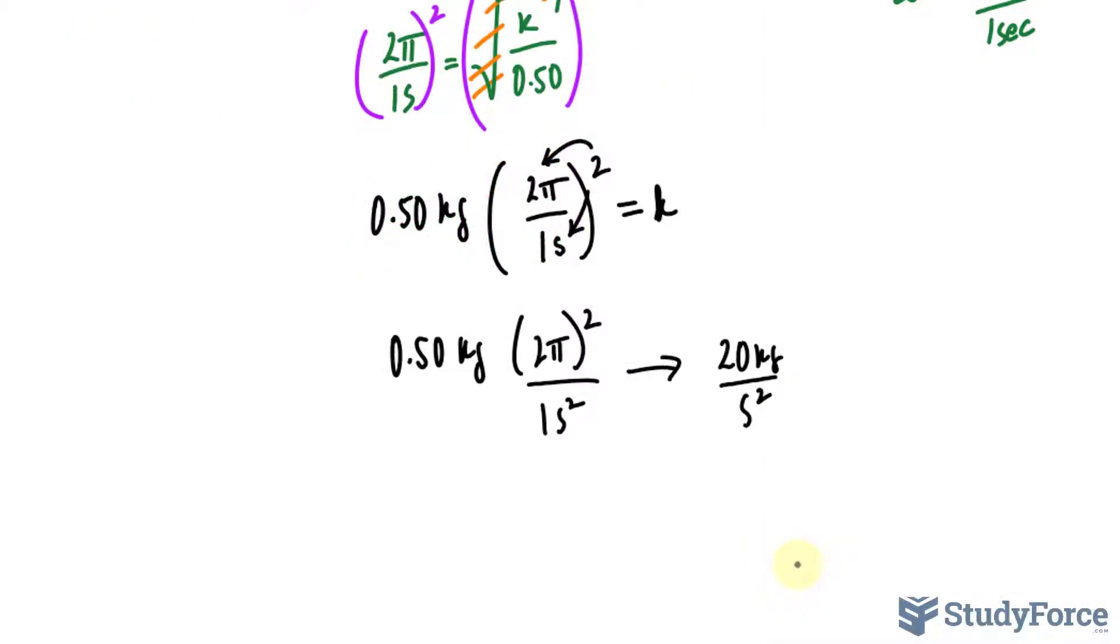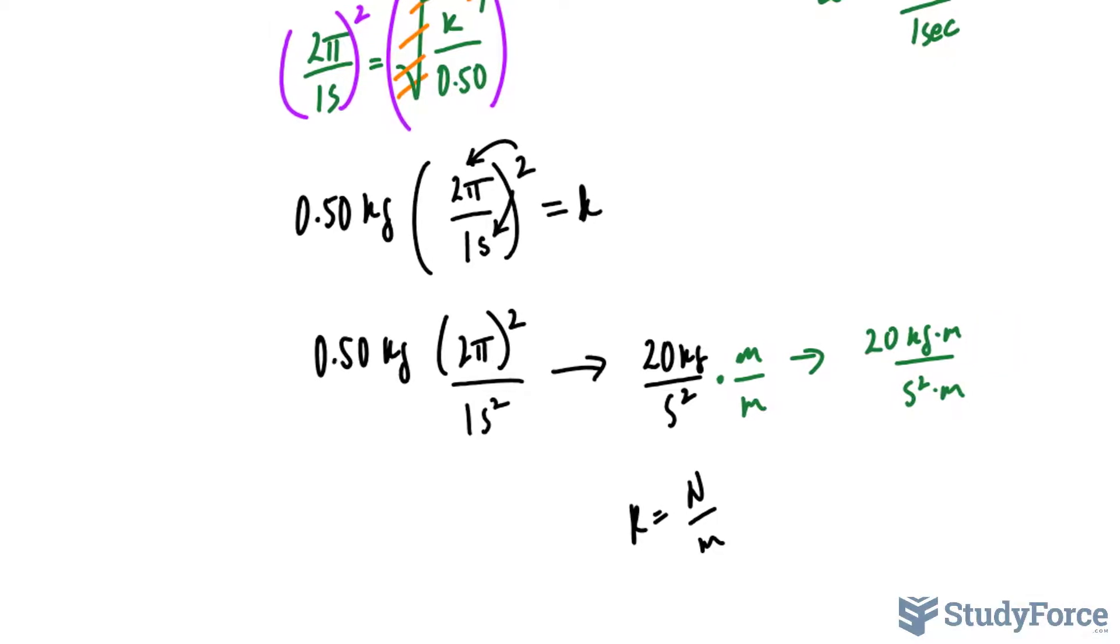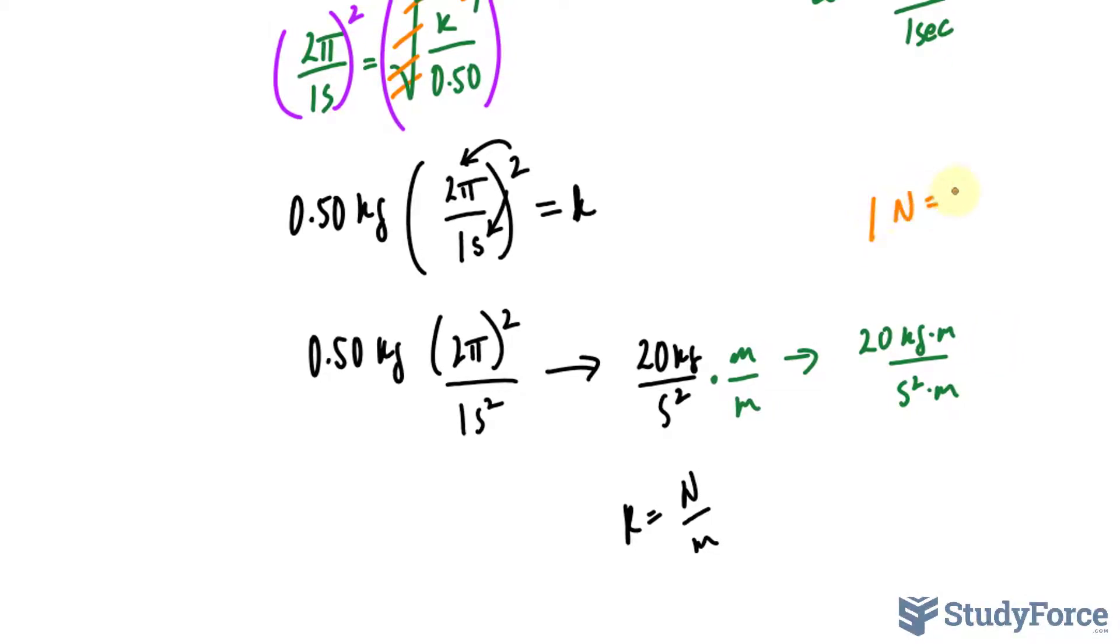The units are kilograms per second squared. Now if you recall, the units for the spring constant are usually in newtons per meter. This doesn't look like newtons per meter. We can manipulate this by multiplying by meter over meter. That gives us 20 kilograms times meters per second squared times meters. Remember that 1 newton equals 1 kilogram times meter per second squared. So using these units, we can write this as 20 newtons per meter, which are the correct units for the spring constant.